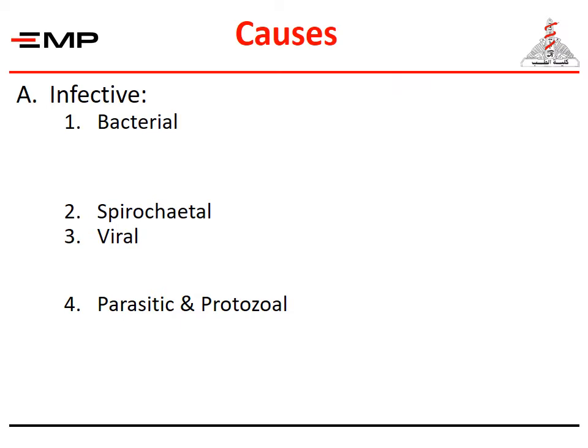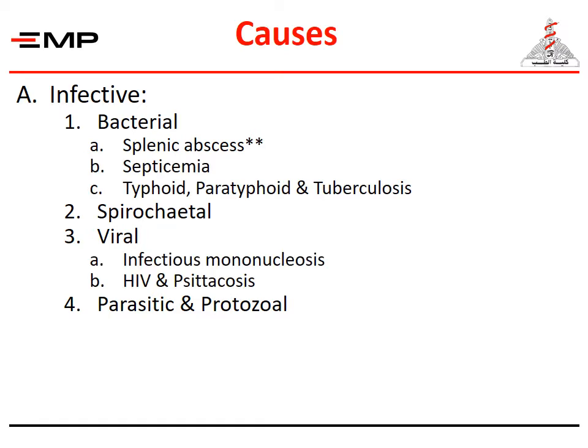Infective causes may be bacterial, spirochetal, viral, protozoal, or parasitic. Splenic abscess may be due to infected thrombus or secondary to typhoid, paratyphoid, otitis media, osteomyelitis, puerperal sepsis, and other septic foci. When ruptured it might cause a left subphrenic abscess if contained, or generalized peritonitis. The patient is toxic and if left untreated may develop septic shock. Percutaneous drainage is usually successful; otherwise splenectomy is indicated.